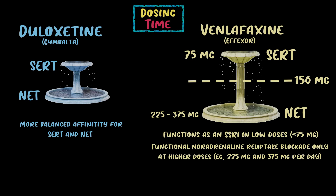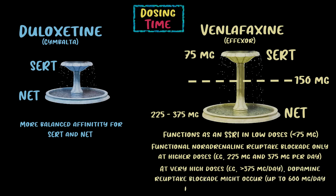This is why Effexor studies only show superior efficacy at doses above 150 milligrams — that's when you're adding the NET receptor. The maximum recommended dose for moderately depressed patients is 225 milligrams per day, but one study referenced in the drug label found that severely depressed patients responded to an average dose of 350 milligrams. To quote Stahl, non-responders at low doses should try high doses to be assured of the benefits of dual SNRI action. At very high doses above 375 milligrams per day, dopamine reuptake blockade is also present, and up to 600 milligrams per day has been given for heroic cases.